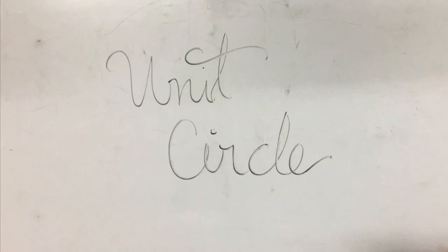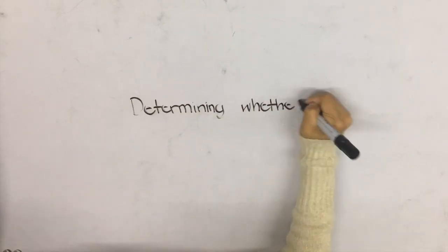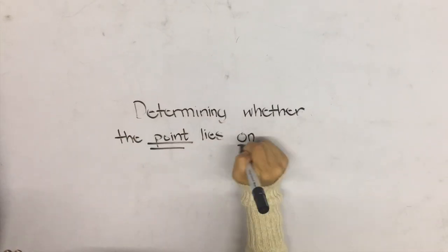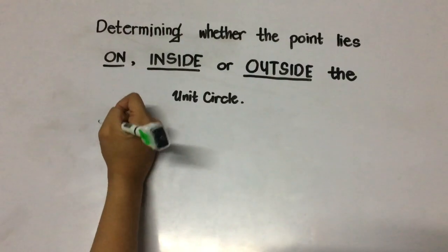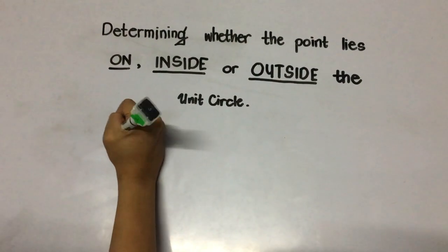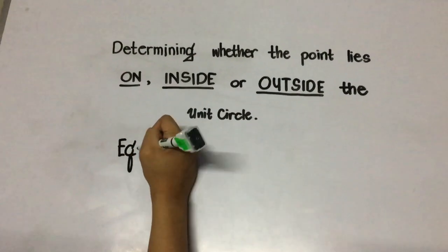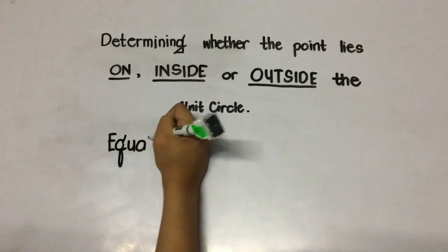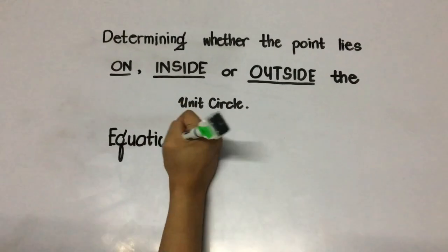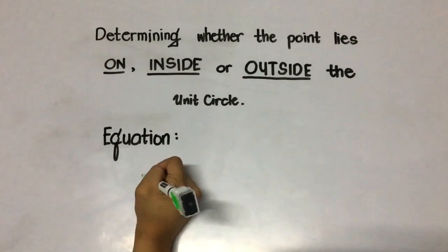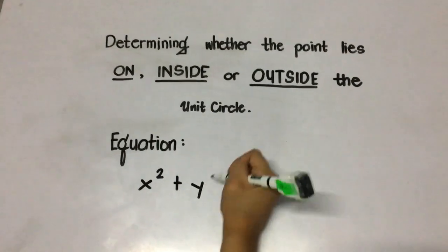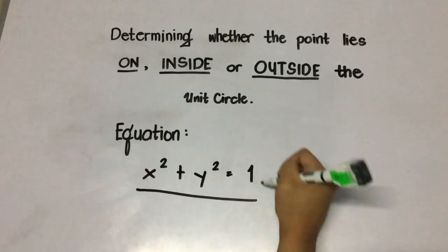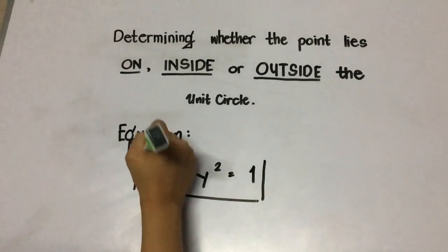Hi guys, we're going to discuss the unit circle — specifically determining whether a point lies on, outside, or inside it. To determine whether a point lies on, inside, or outside the unit circle, we will use the equation x squared plus y squared is equal to 1.